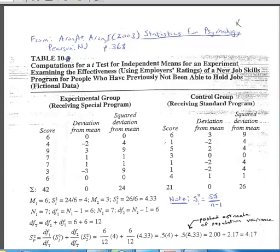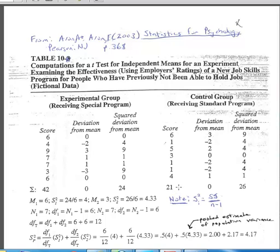When we conduct this analysis, the very first thing we do for both the experimental group subjects and the control group subjects is calculate the mean. We sum the scores, come up with a total of 42, divide by seven scores, and for the experimental group we get a mean of 6. For the control group we sum up the seven scores, get 21, divide by 7, and get a mean of 3.